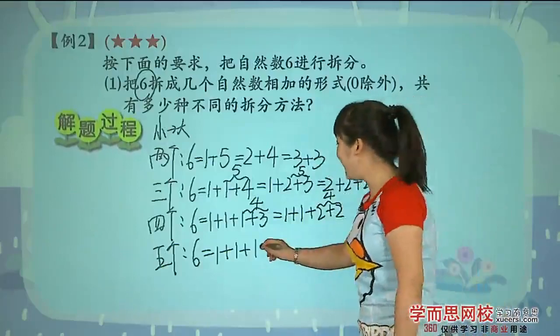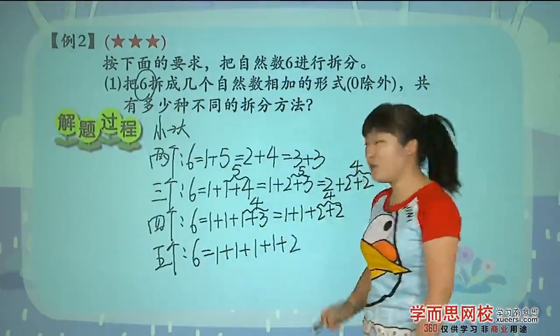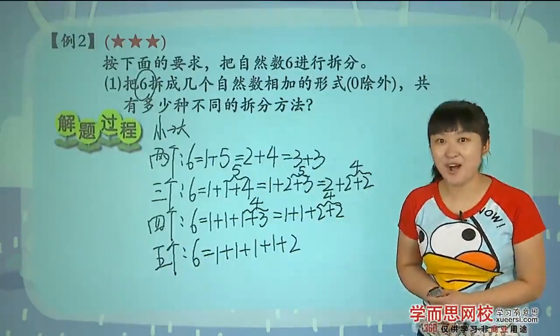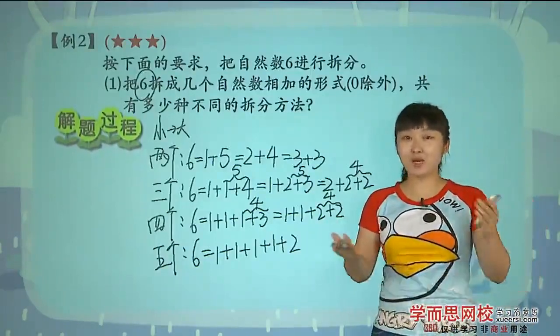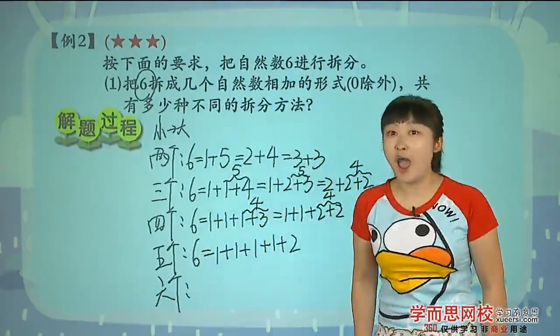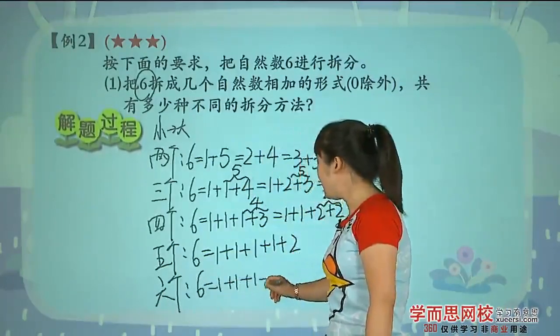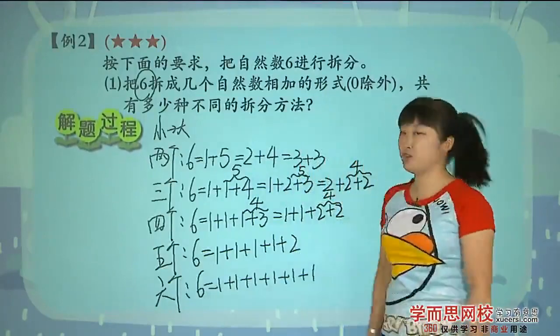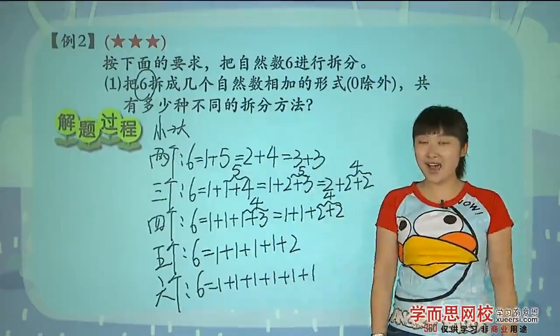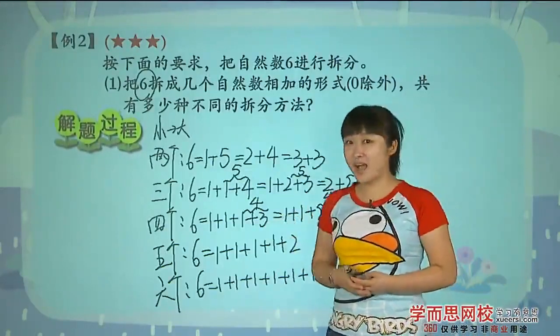我们下面该想谁了,该想把六拆成五个数的了。这五个的应该特别的容易,怎么办,前面是一后面是二了。一加一加一,然后加一再加个二。这个就是把六拆成五个数了。还有没有,当然有了,还有一个最最简单的,把六拆成六个数了,六等于一加一加一加一加一再加个一,也就是六个一相加的形式,完了搞定了。